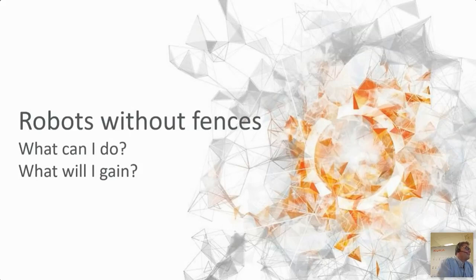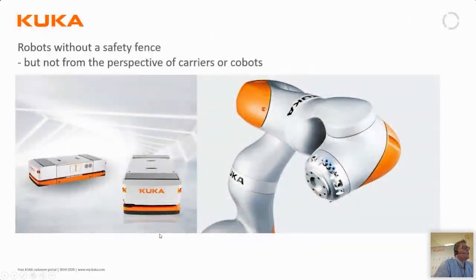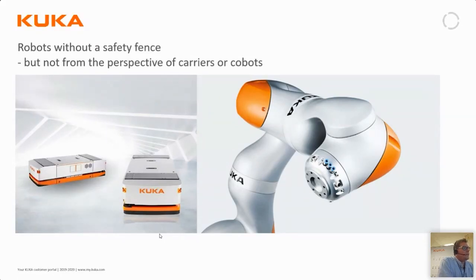Robots without fences. That is a topic that implies quite a lot of applications, and in this webinar we will actually not be focusing on either mobile platforms or AGVs, which are a kind of robot that obviously doesn't use fences. But it's not focusing on the topic of collaborative robots or cobots either. Instead, we are going to look at the application of what we would call a standard robot without fences around it, and what is possible to do and what can you possibly gain by doing so.